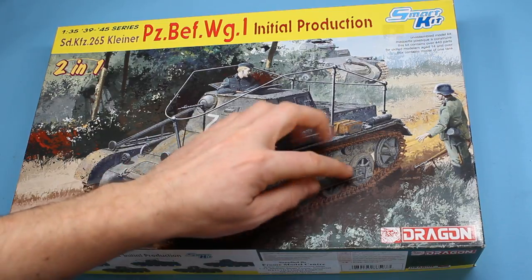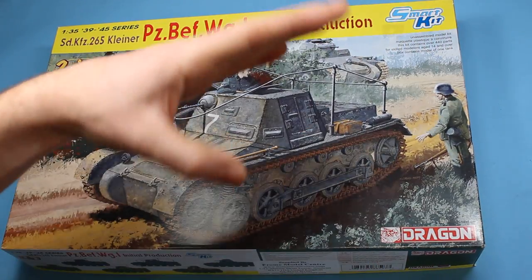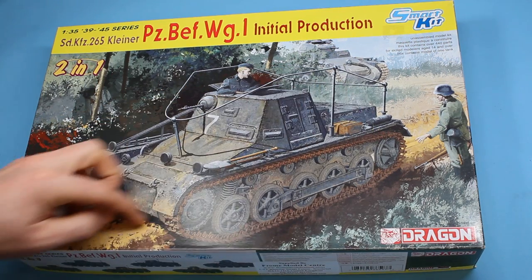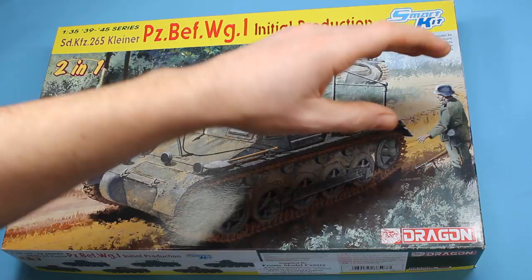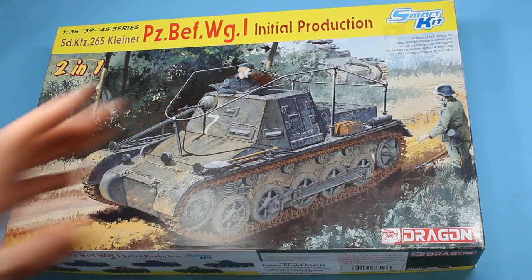So it's got the five road wheels and the idler in the middle of the chassis as opposed to the A which had four wheels and the idler ran on the ground as well. It's the fifth wheel and the idler.